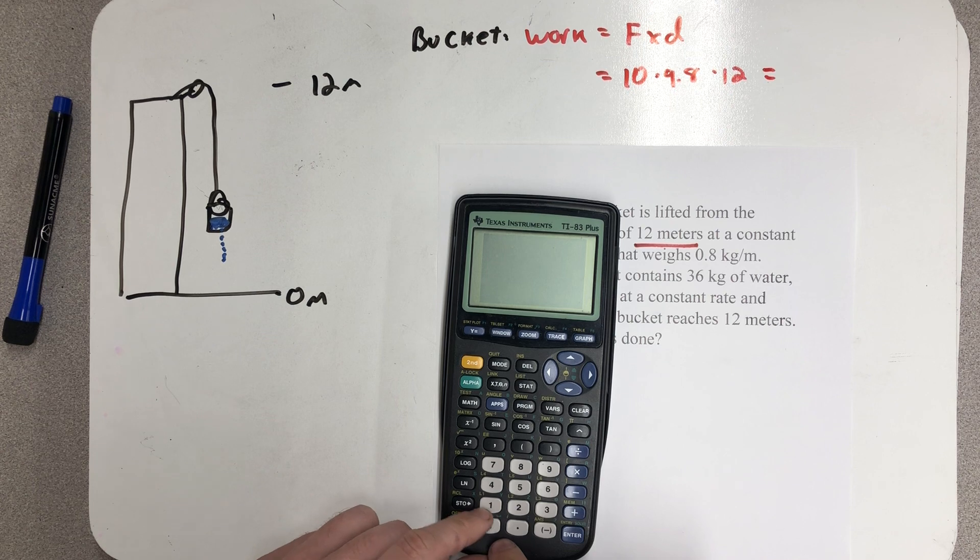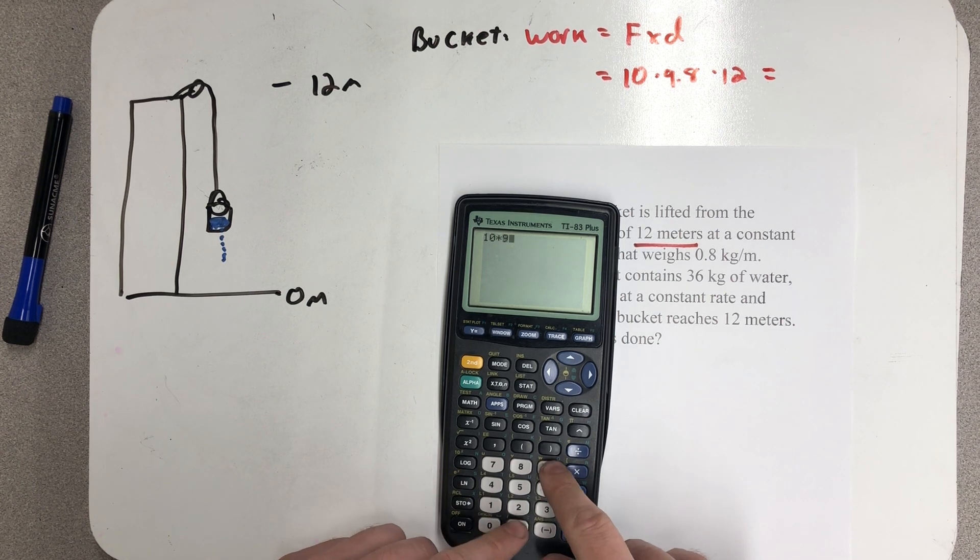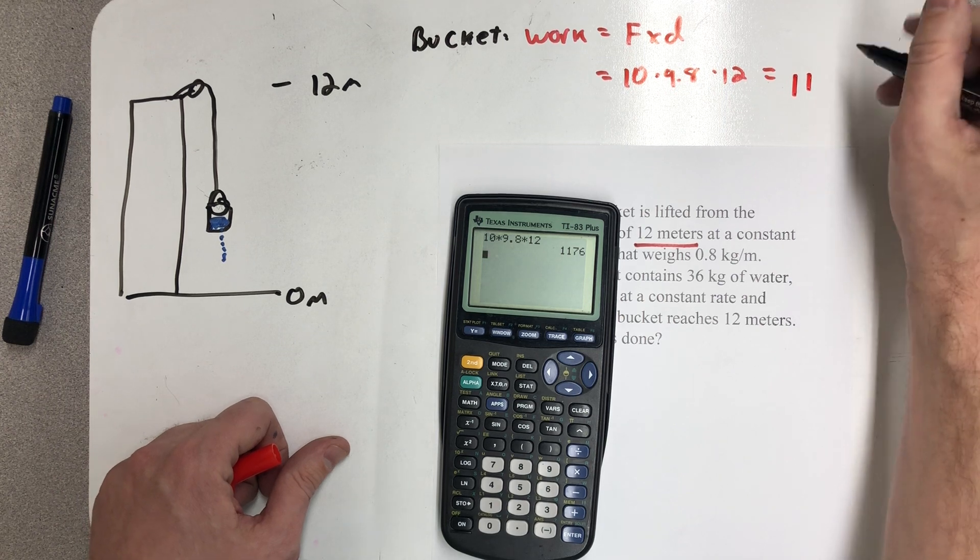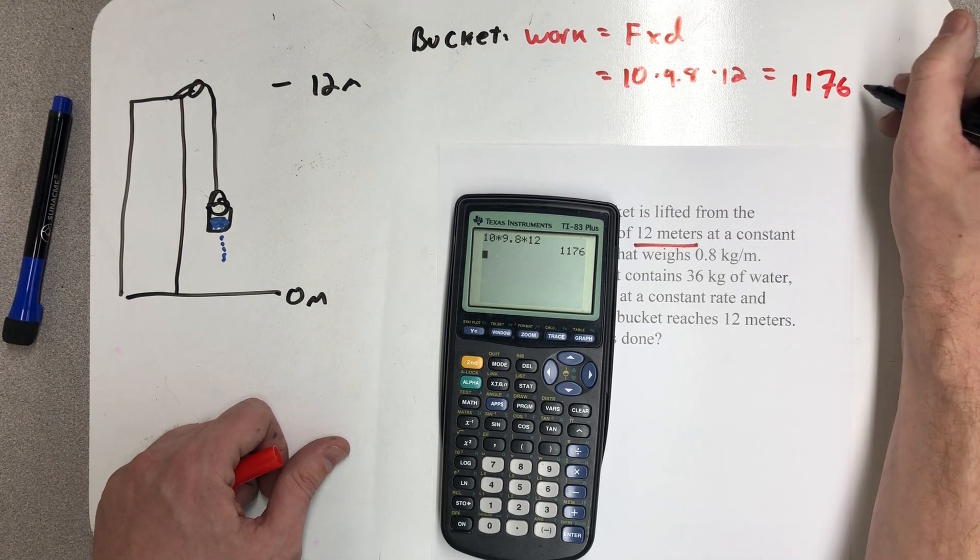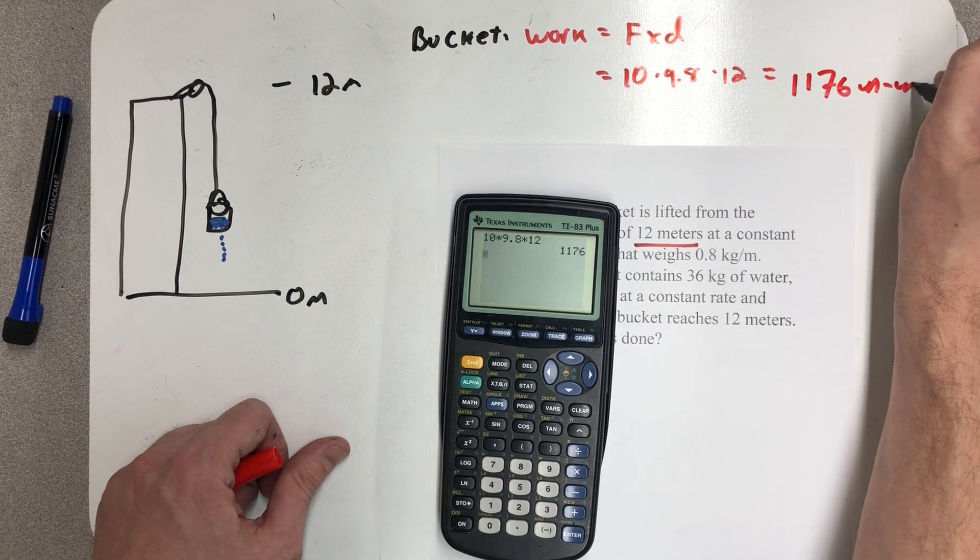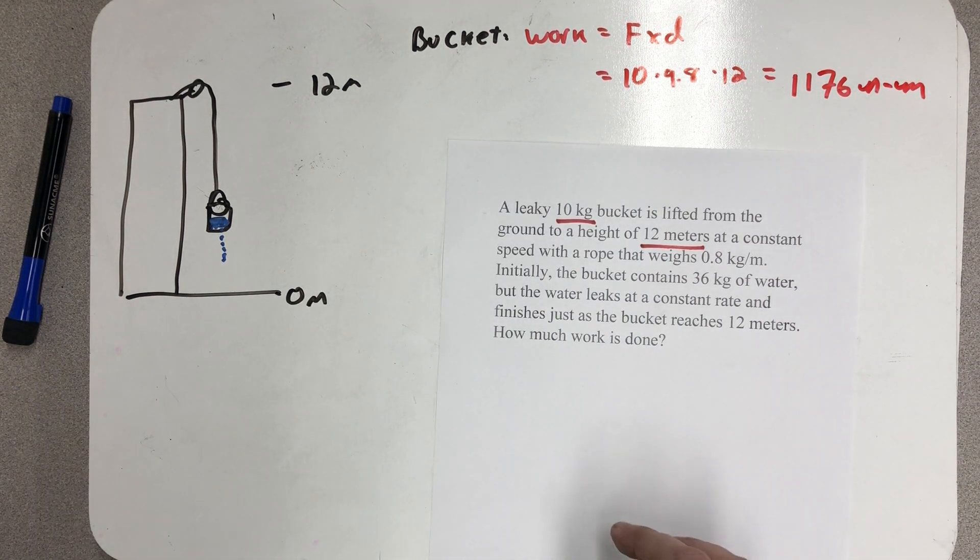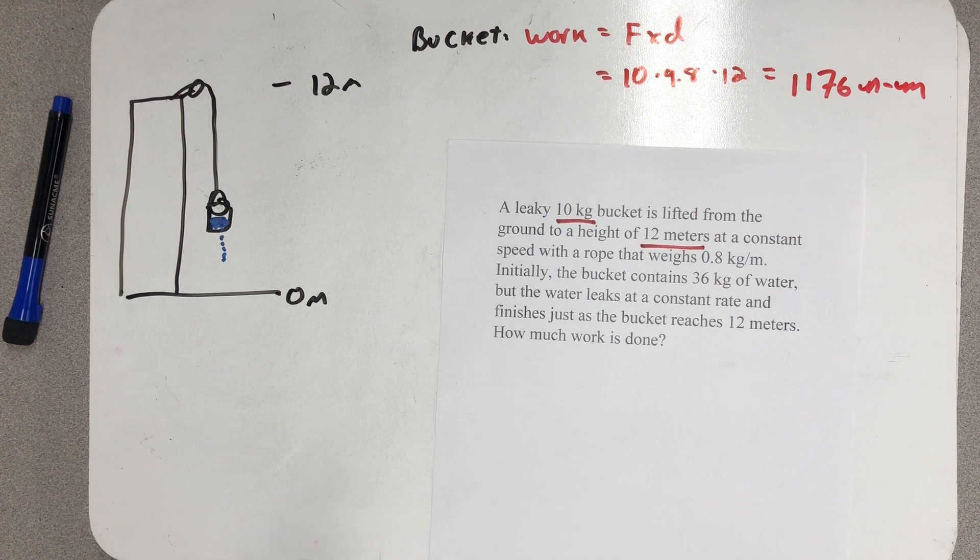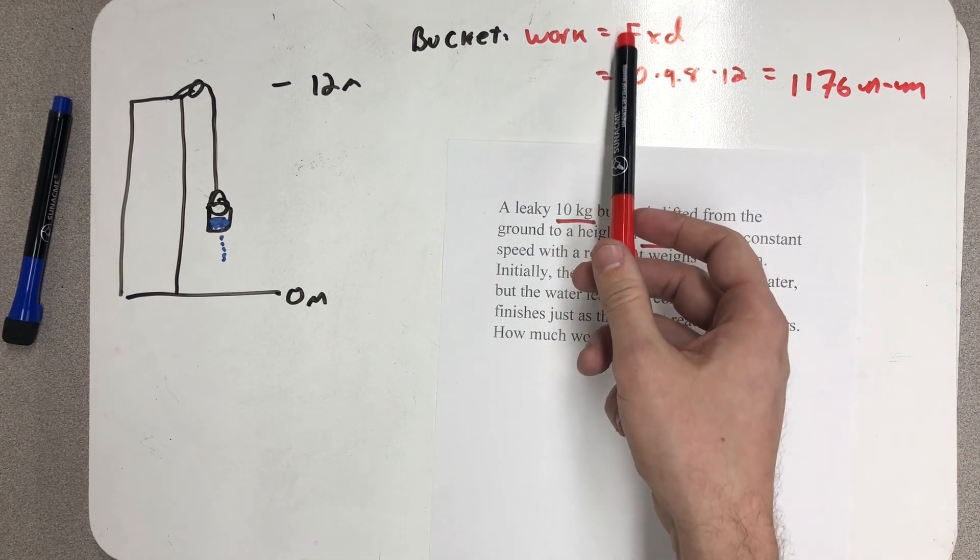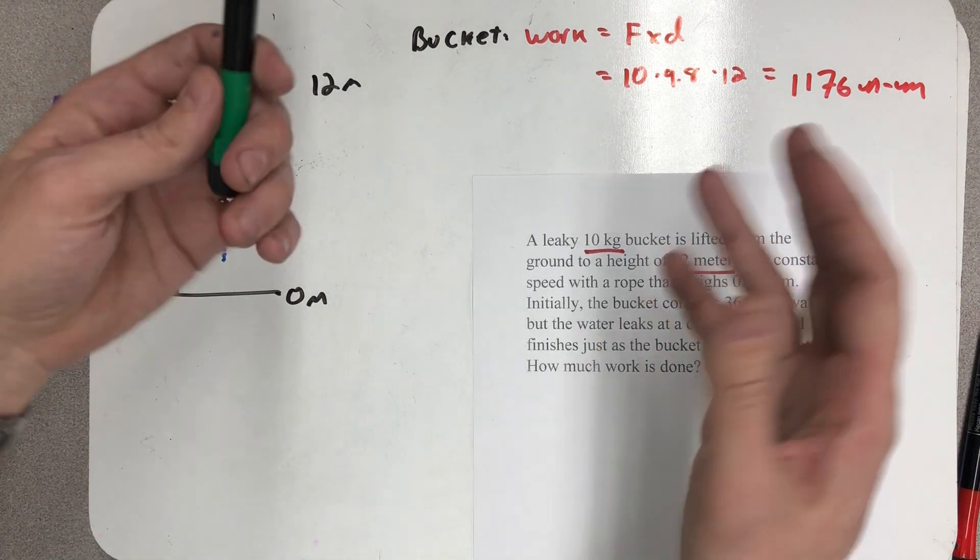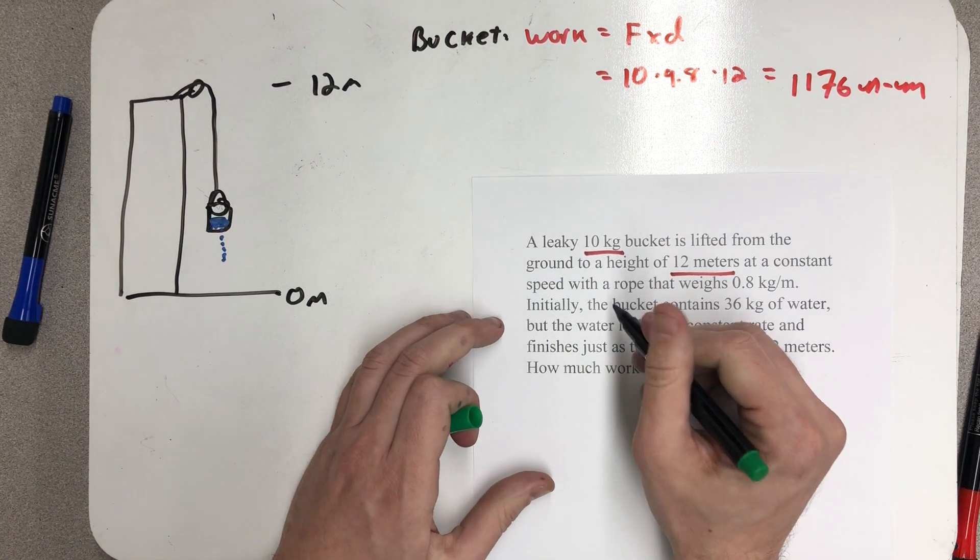So let's see, I have 10 times 9.8 times 12. I get 1,176 Newton meters or joules. I could say 1,176 joules instead. I've always liked using the units here as the Newton meter, reminding me that I'm applying a force over a distance to calculate work. All right, so now we have the work done by the bucket.